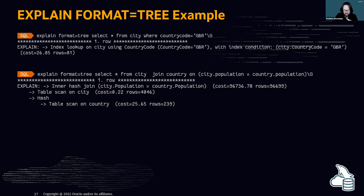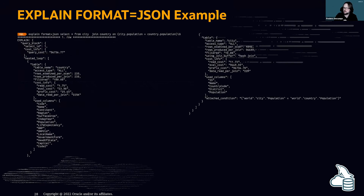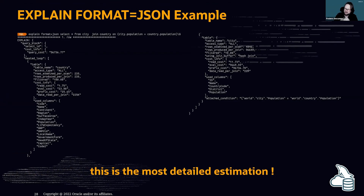The last and most complete output format is JSON. When you do EXPLAIN FORMAT=JSON, you get a lot of information about the query and its cost — the most detailed estimation available. But again, this is still only an estimation.